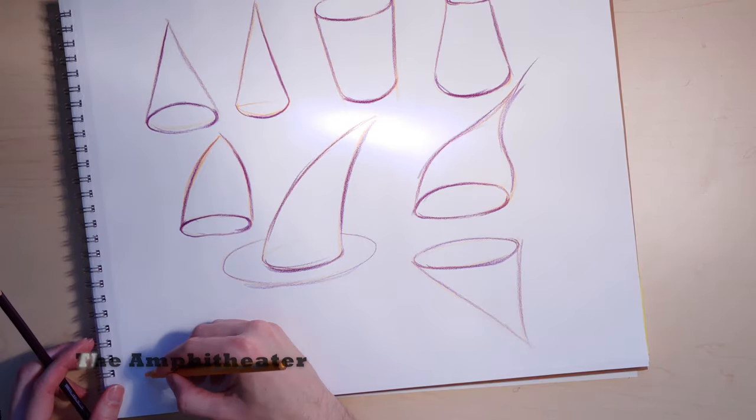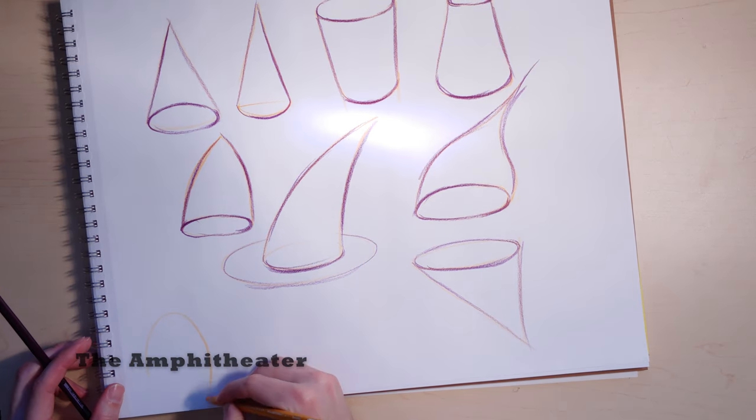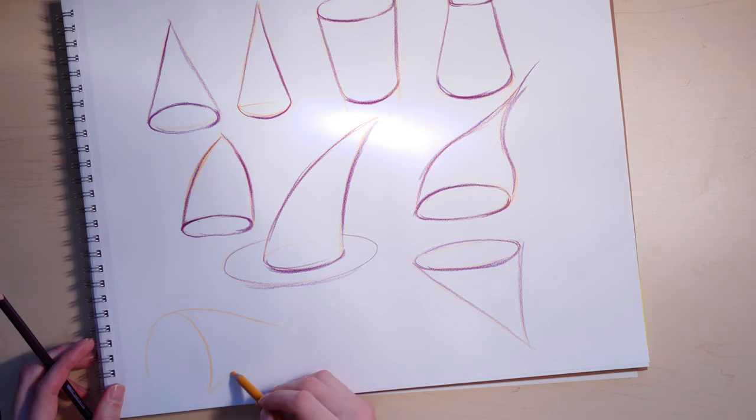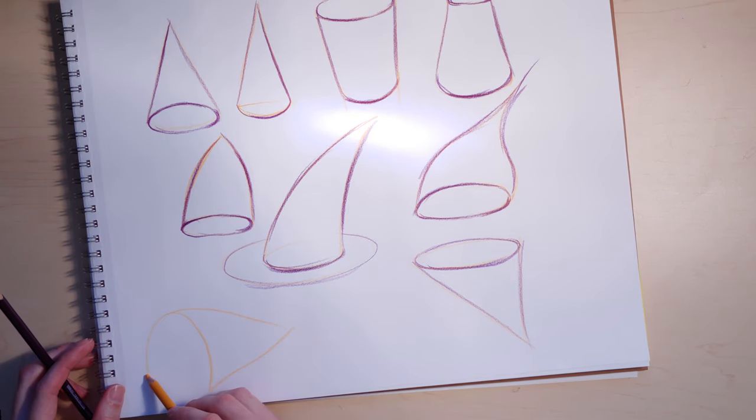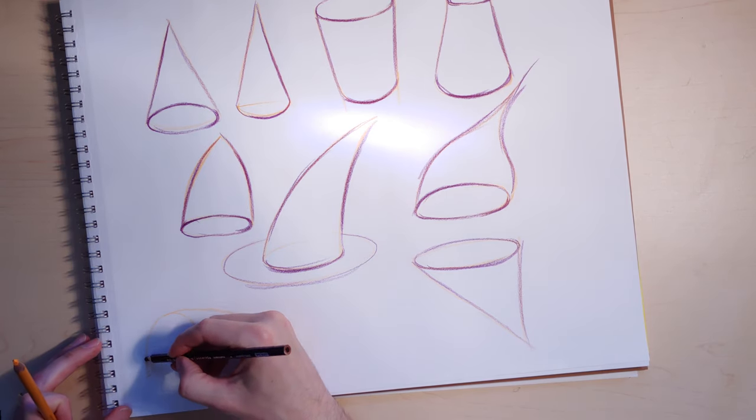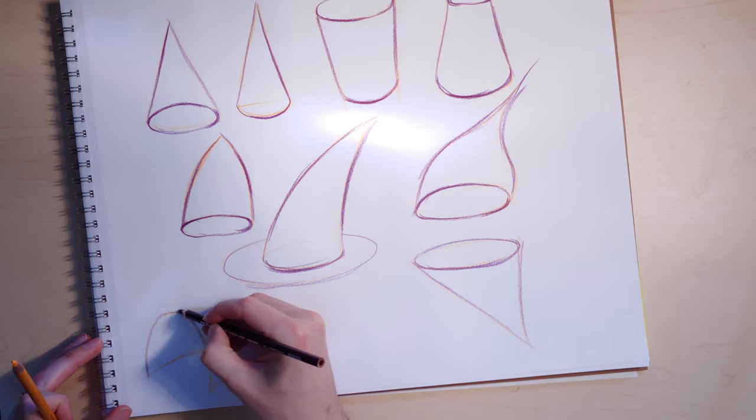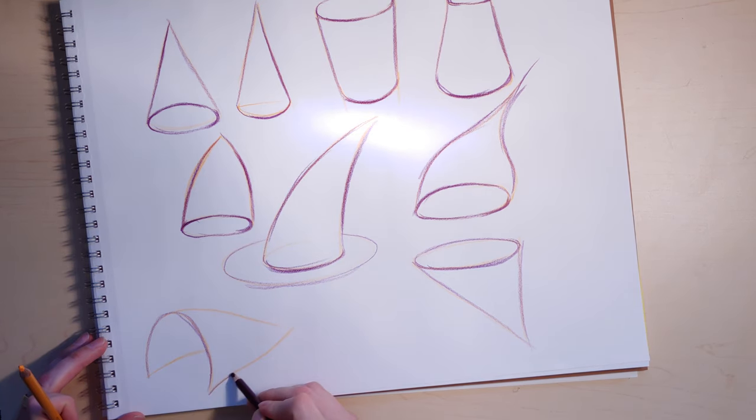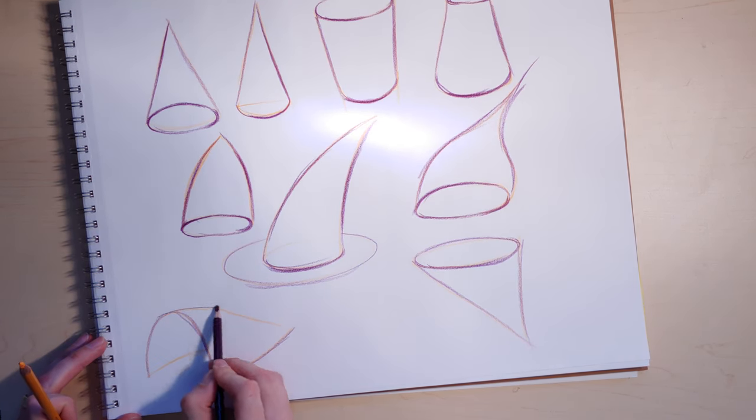If you take a cone, you cut it and turn it on its side, it becomes kind of like an amphitheater or something like that. There are concert halls that are basically designed on this principle, especially outdoor ones, because this kind of form projects sound when it's built large.